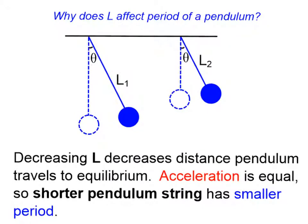So why does the string length affect the period of a pendulum? Here we have two pendulums with string length one and string length two. When we decrease that string length you can see that the distance that the bob of this pendulum is traveling to equilibrium decreases also. Acceleration is going to be equal in both cases, so the shorter pendulum string will have a smaller period.